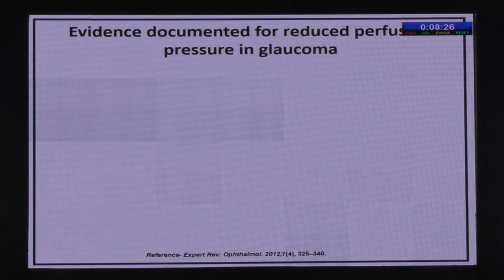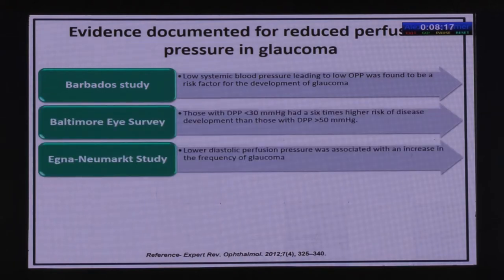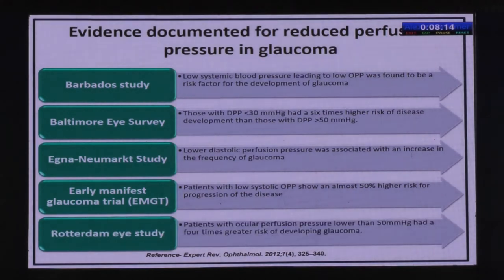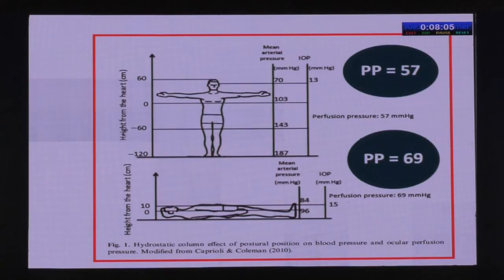The evidence for documented reduced perfusion pressure in glaucoma comes from multiple studies — the Barbados study, the Baltimore study, EGNA-Newmark, the Early Manifest Glaucoma Trial, and the Rotterdam study — all conducted in different population groups, all showing that reduced ocular perfusion pressure is an important risk factor for glaucoma development and/or progression.